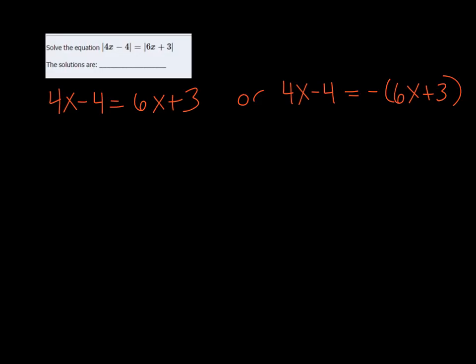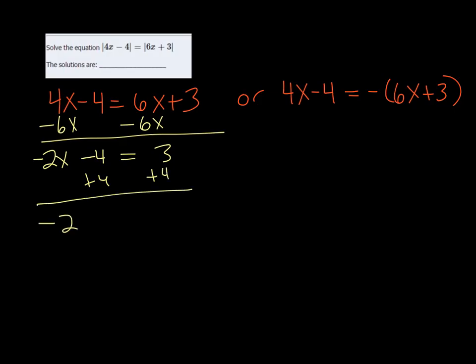And then you just solve each one separately. So over here I can subtract 6x on both sides, and I'm going to get negative 2x minus 4 equals 3, then add 4 to both sides. So negative 2x is equal to 7, then divide by negative 2, so we get 7 over negative 2.